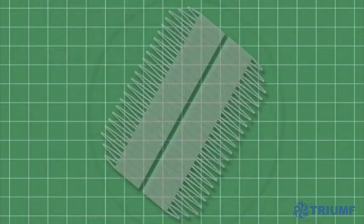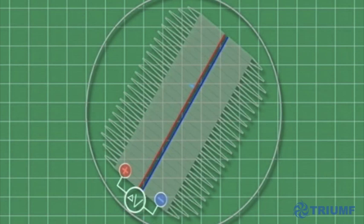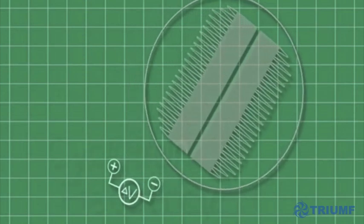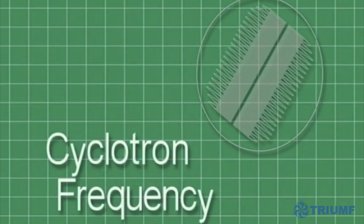To continuously increase their kinetic energy, the electric field polarity switches each time the ions approach the gap, boosting their velocity and causing them to trace a spiral path outward. The electric field polarity switches millions of times per second. Called the cyclotron frequency, it's the cyclotron's most important characteristic.